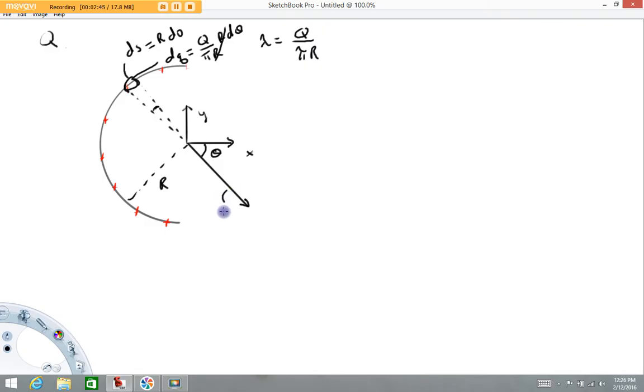The magnitude of this field DE is going to equal K DQ over R squared. The DQ we've got an expression for: Q over pi D theta. But before we even get that far, let's talk about adding these vectors up.